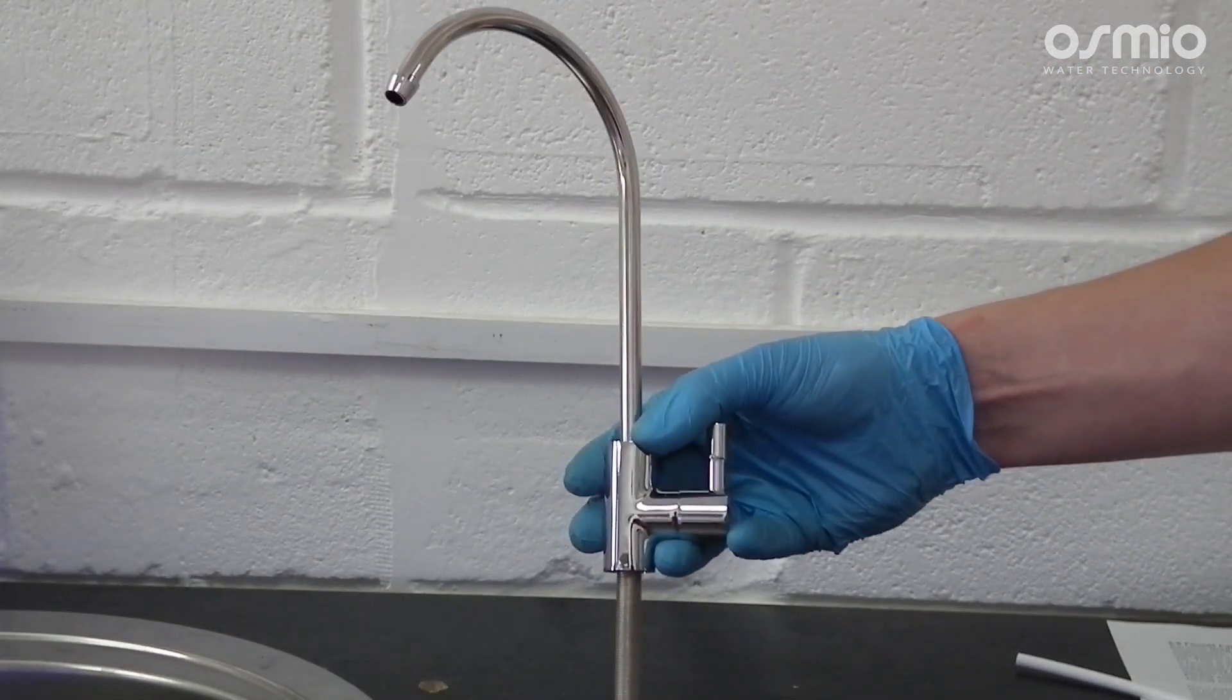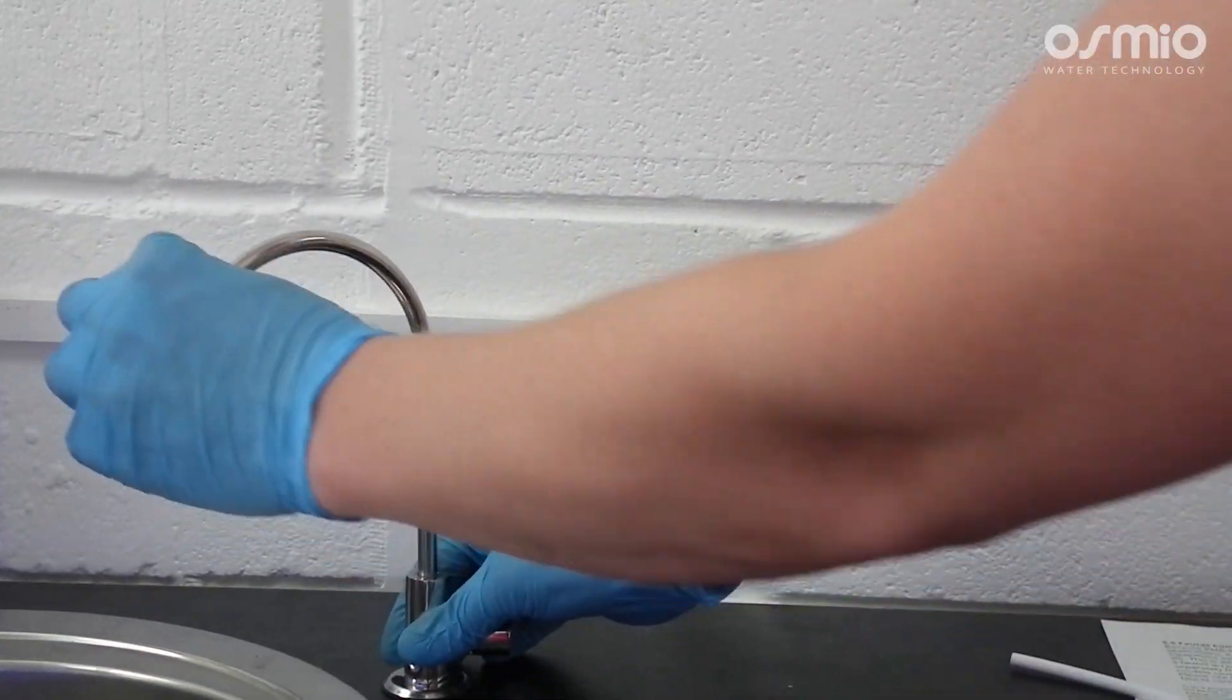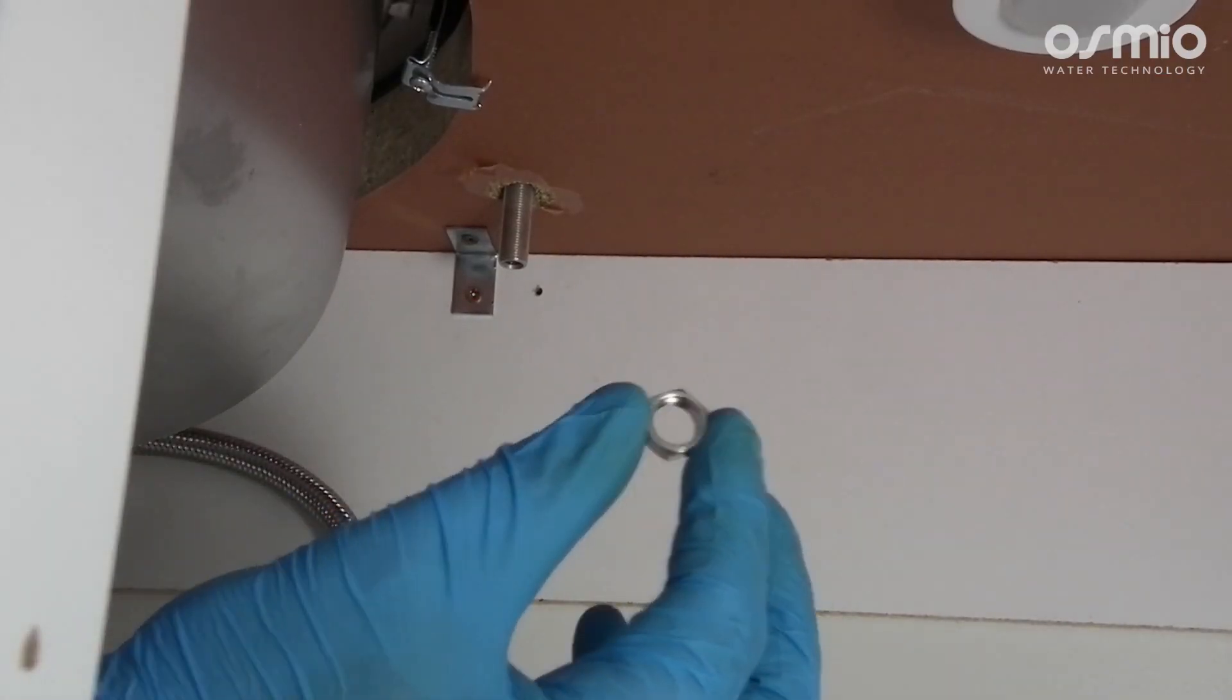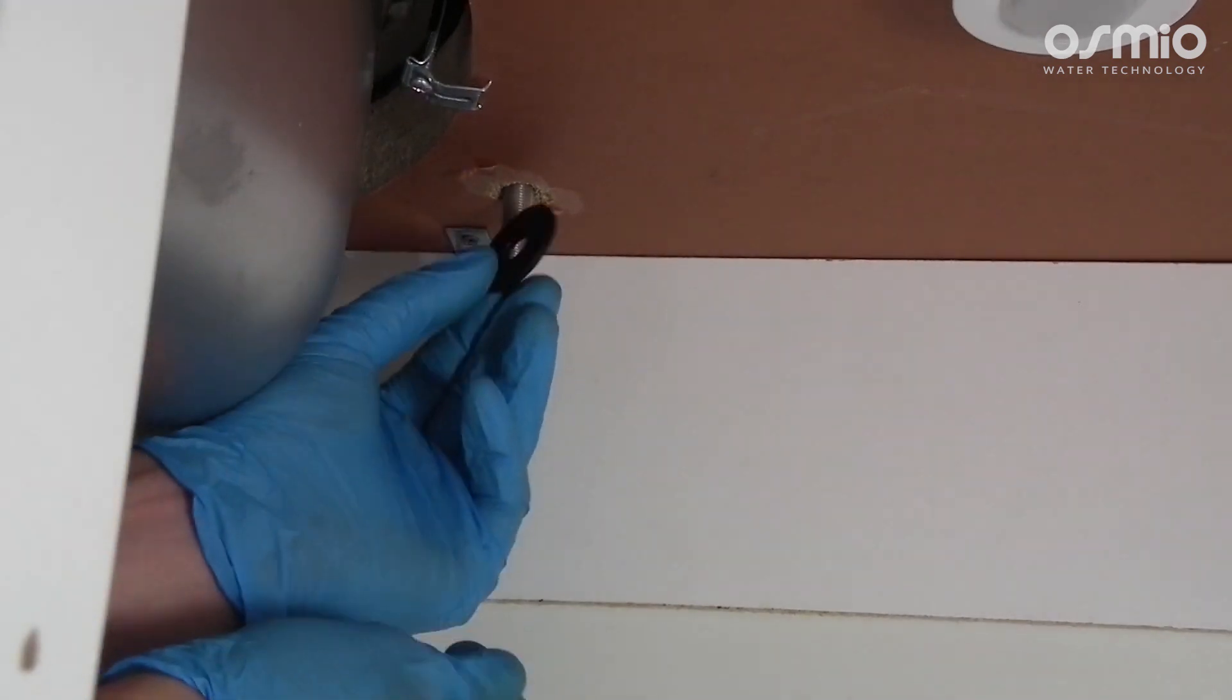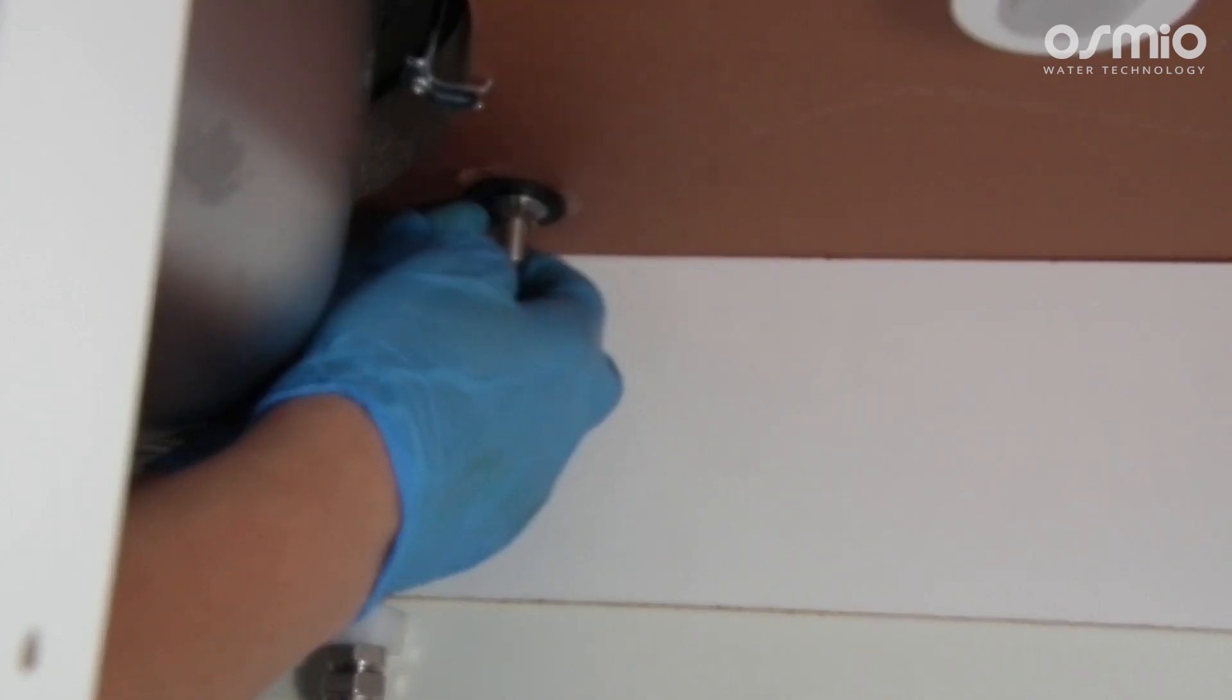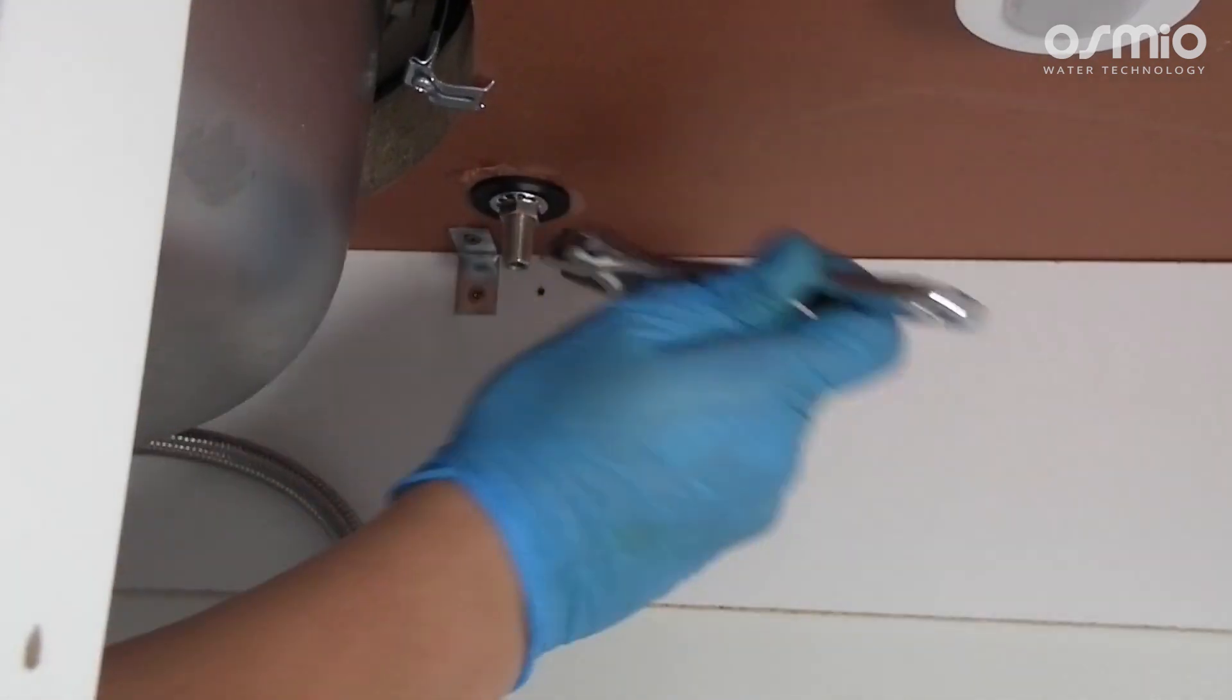Take the tap, the decorative base plate and the rubber gasket and place the tap through the worktop. On the other side of the worktop use the faucet nut, locking washer and the flange. First fit the flange, then the locking washer, then tighten the tap with the faucet nut, first by hand and then with an adjustable wrench.